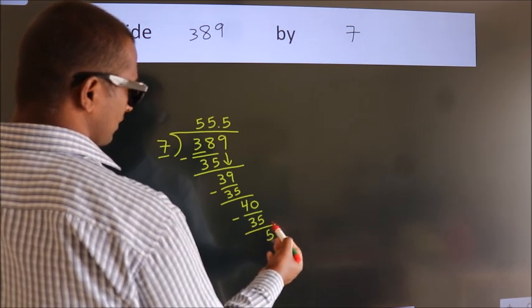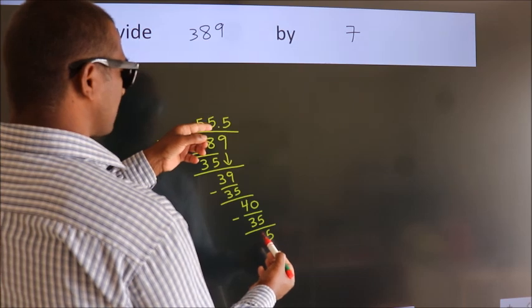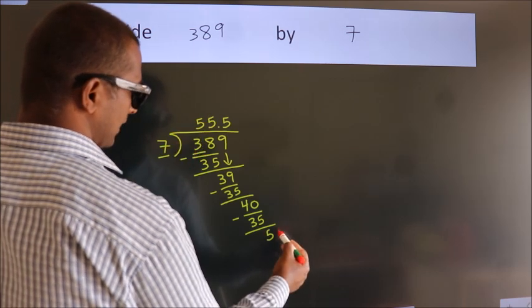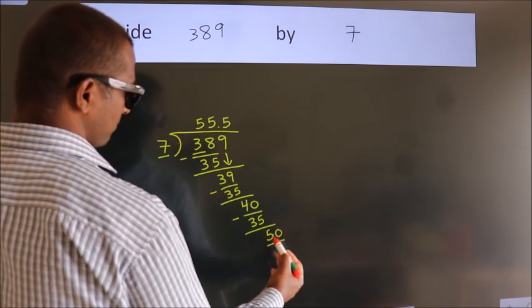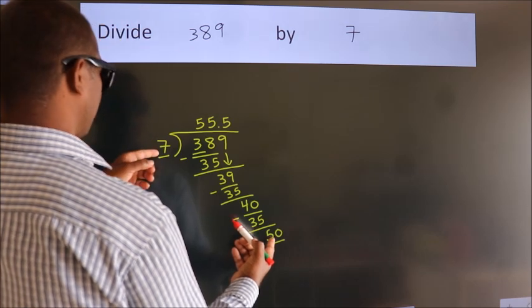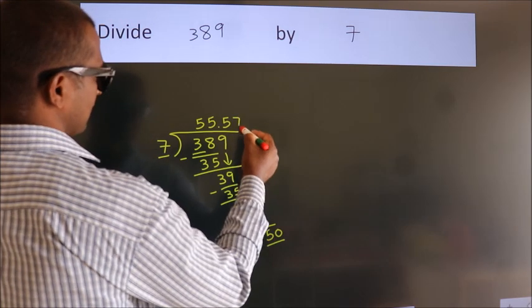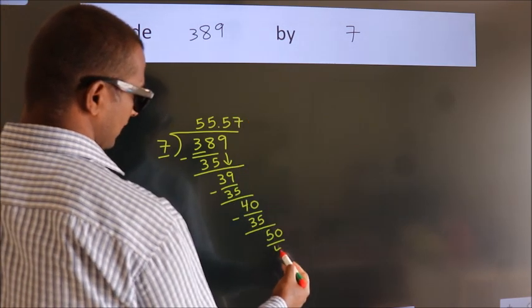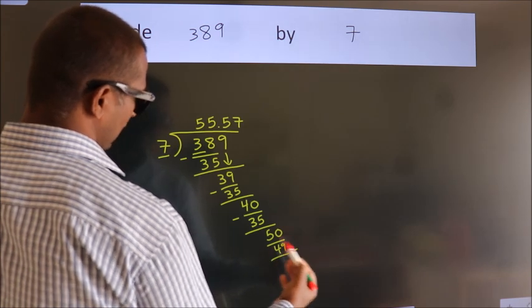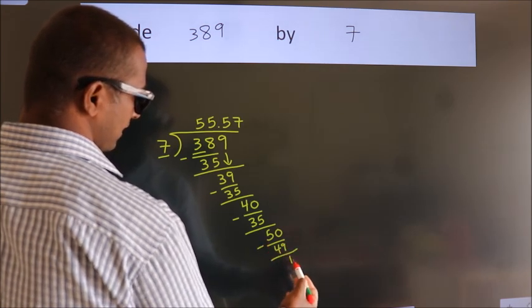After this, we already have the decimal. So, directly take 0. So, 50. A number close to 50 in 7 table is 7 fives 49. Now, we subtract. We get 1.